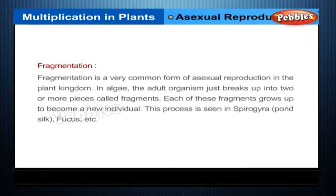Fragmentation is a very common form of asexual reproduction in the plant kingdom. In algae, the adult organism just breaks up into two or more pieces called fragments. Each of these fragments grows up to become a new individual. This process is seen in spirogyra, pond silk, fucus, etc.